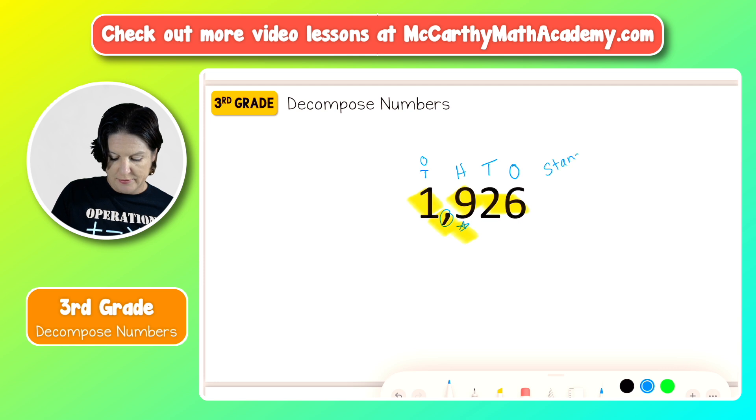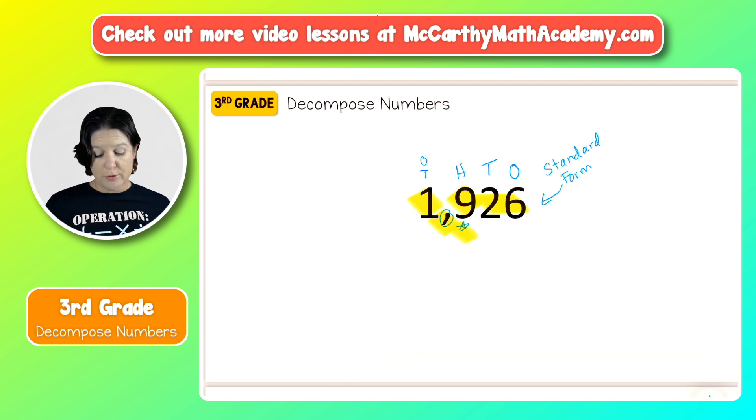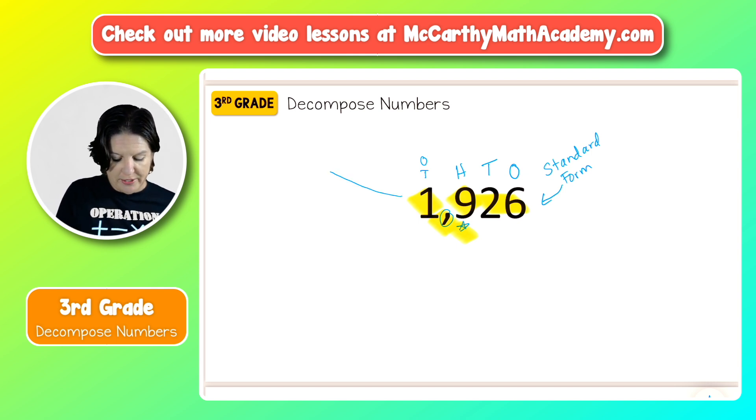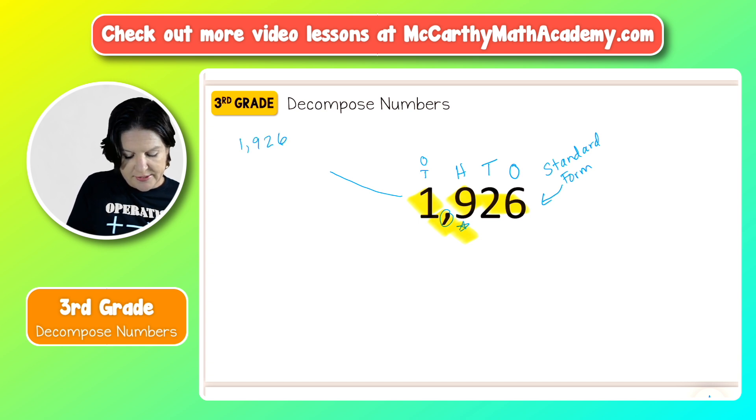What we're going to do is decompose the number 1,926 a bunch of different ways. I'm just going to jump into it and see if you can follow along. The first way, we'll make a little web here. We've got 1,926. What I like to do is box up some of the digits and then write it out.